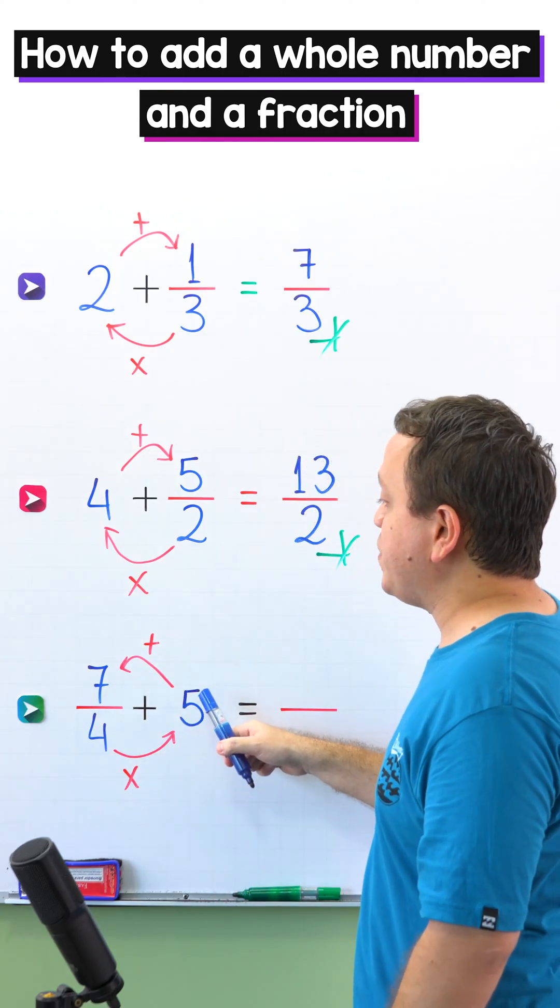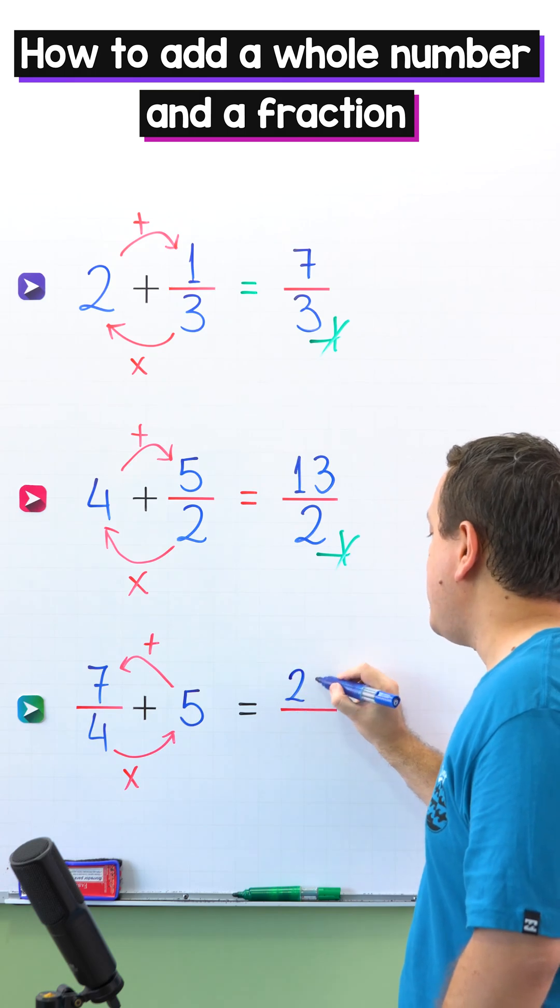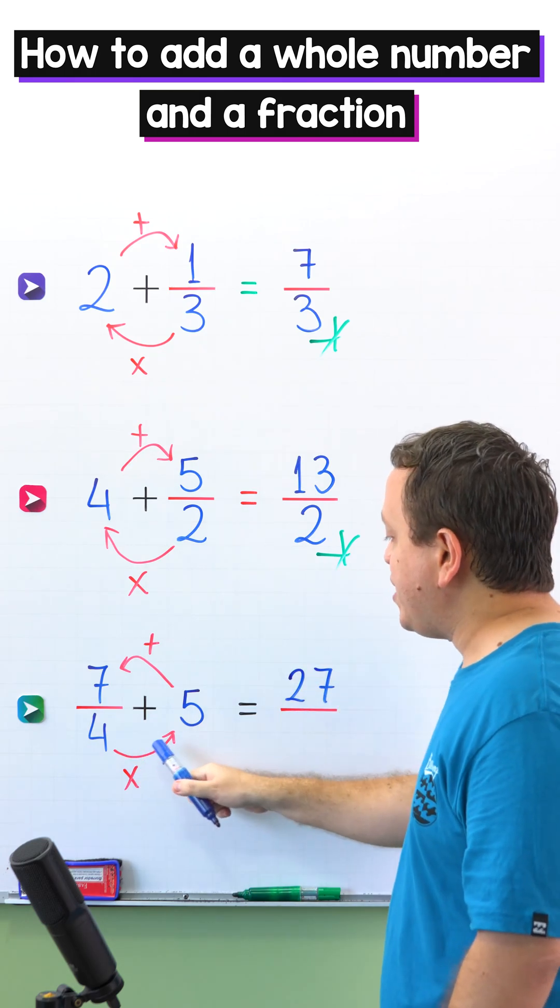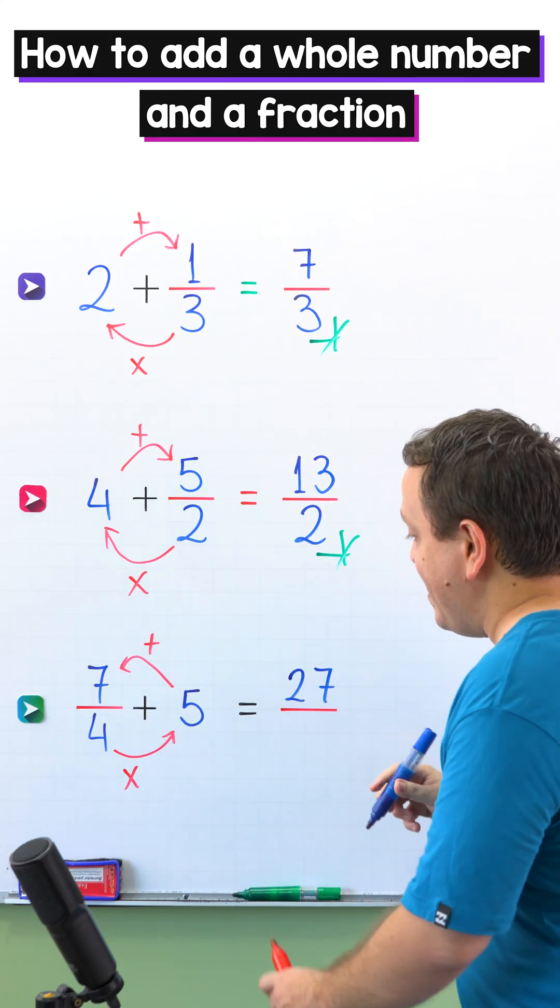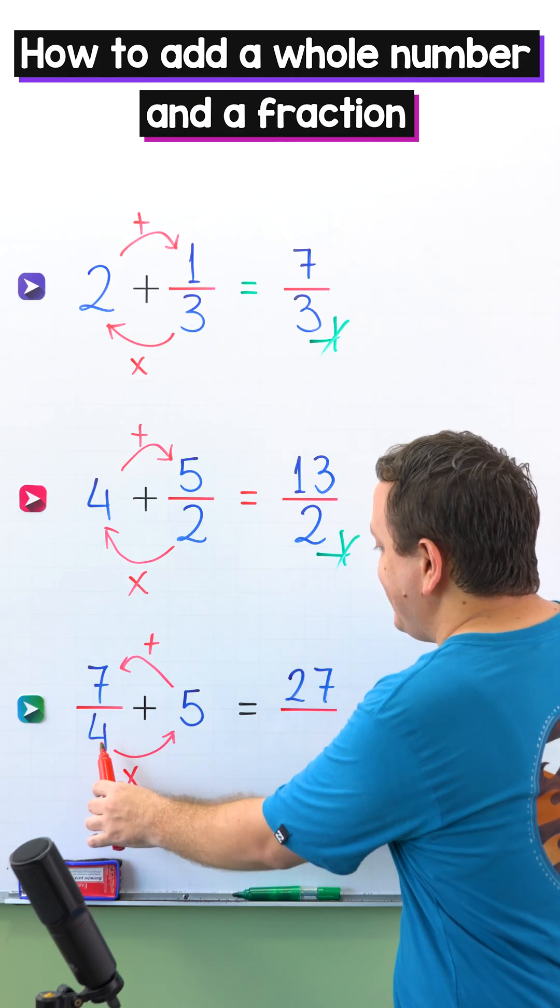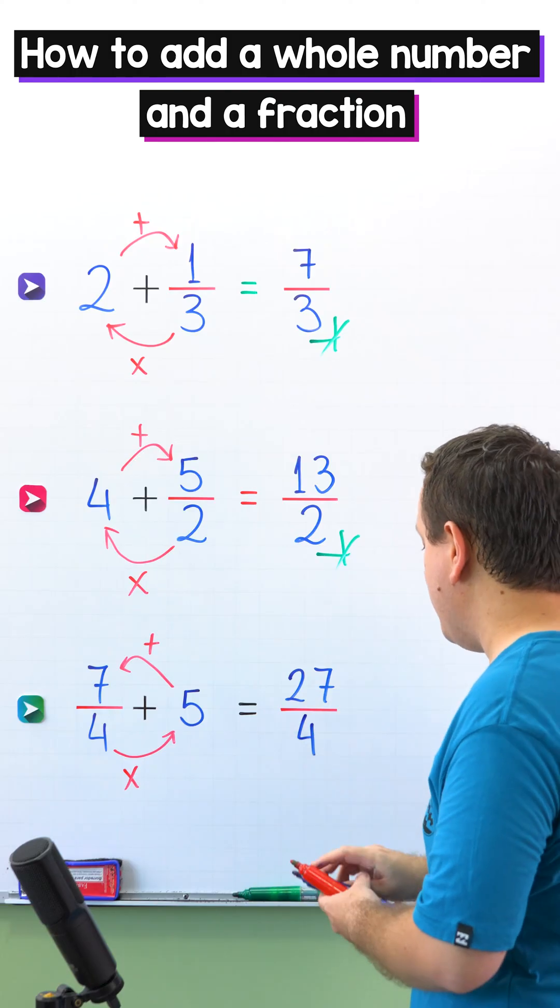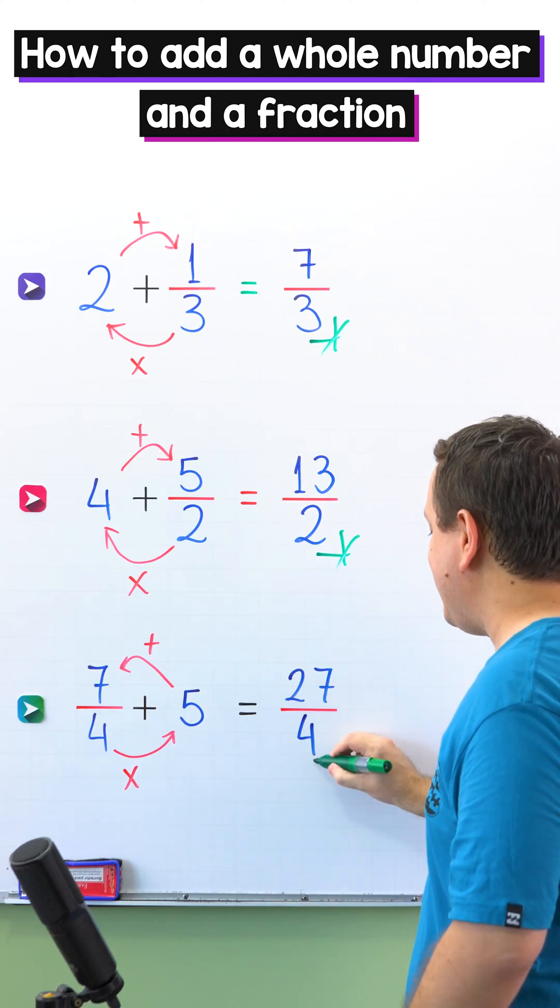4 times 5 is 20 plus 7 equals 27. Once again, 4 times 5 is 20 plus 7 gives us 27. Next, the denominator stays the same, so 4 come over here. Our final answer is 27 fourths.